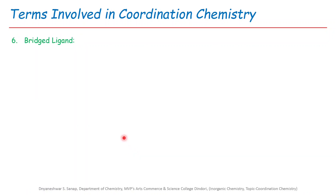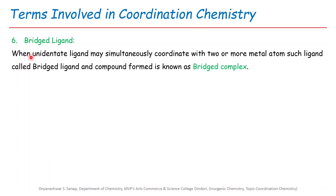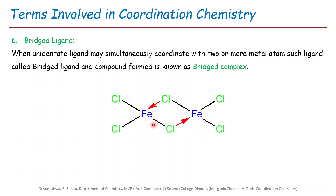The sixth important term is bridging ligand. When a unidentate ligand is simultaneously coordinated with two or more metal atoms or ions, such a ligand is called a bridging ligand, and the compound formed is known as a bridging complex. For example, a chlorine atom at a central point is coordinated with two Fe ions simultaneously, making it a bridging ligand, and the complex formed is called a bridging complex.